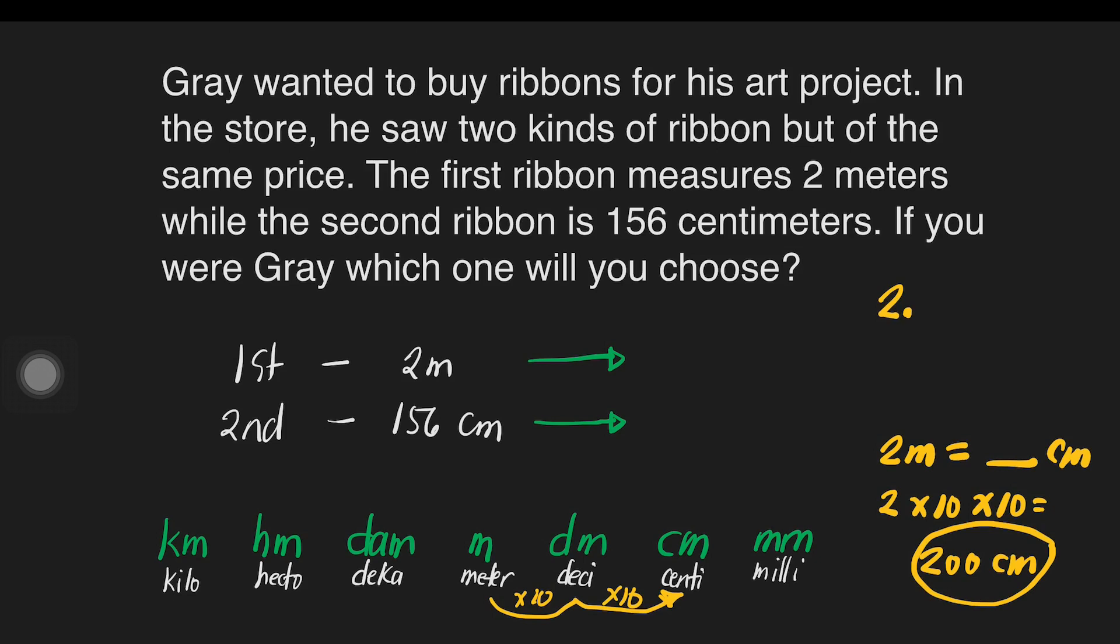That is 2 point, then we will move 2 places to the right. That will be 1, 2. And all empty spaces will be filled out with 0. See, we have 200. We don't need to multiply 2 times 10 anymore. Just move the decimal point. That will give us 200.